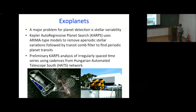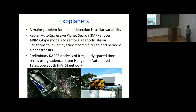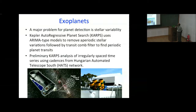A major problem in planet detection is stellar variability — how to separate stellar variability from transit data, or planet transients. We have a group at Penn State working with Chilean statisticians on separating stellar variation from planet transients. They have been using what is known as the autoregressive planet search program and applying it to the Hungarian Automated Telescope South Network to see how well it works — and they were very happy with the results.